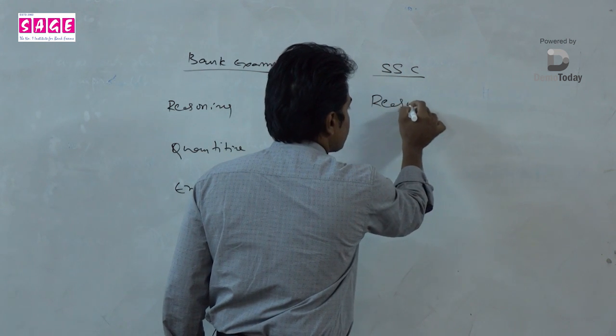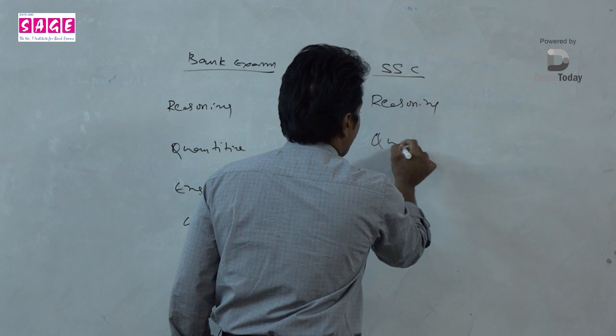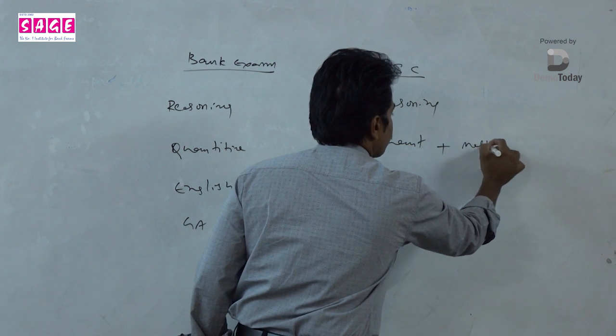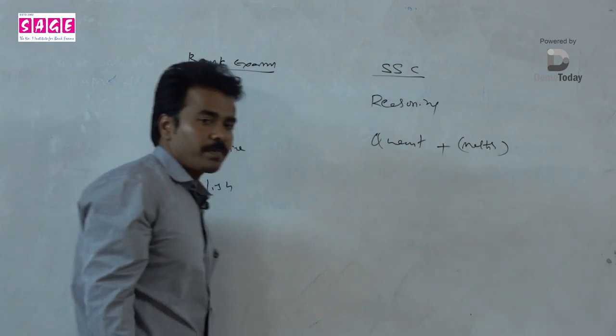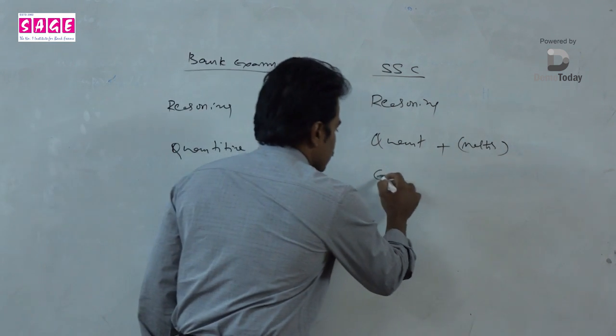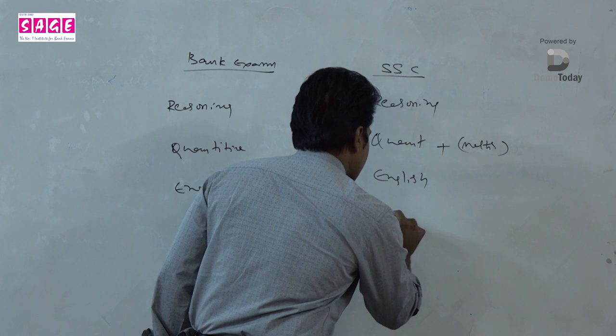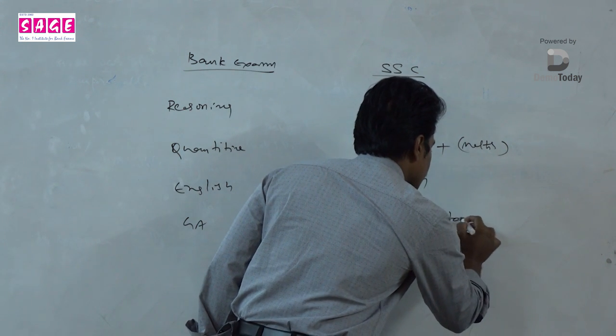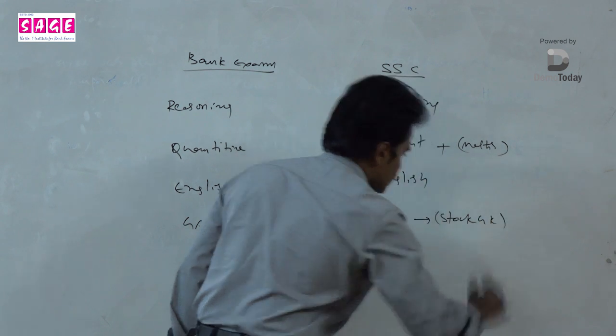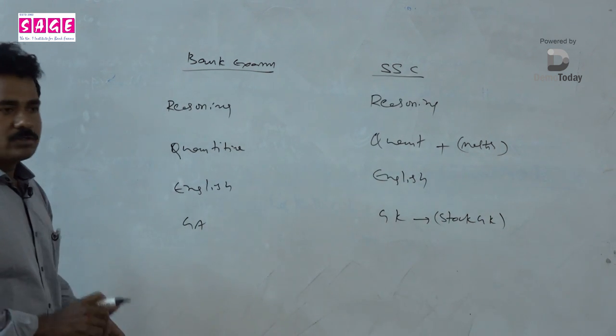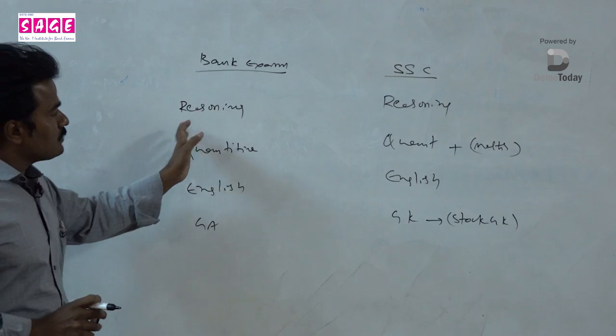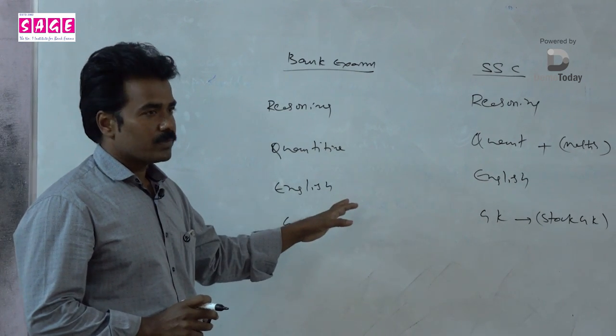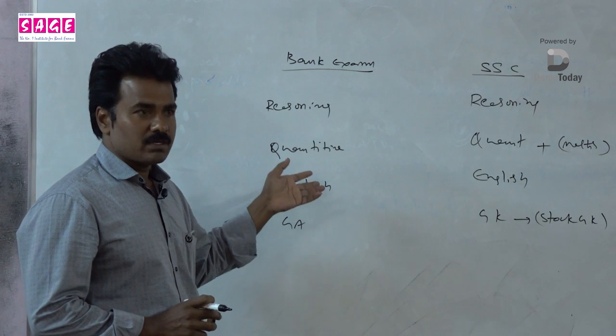In the Staff Selection Commission, the same pattern will be there: reasoning, quantitative which includes pure maths sections, general English, and GK which includes school syllabus. You can see here in the bank exams and Staff Selection Commission, the exam patterns are almost the same—around 90 percent of the syllabus is the same.